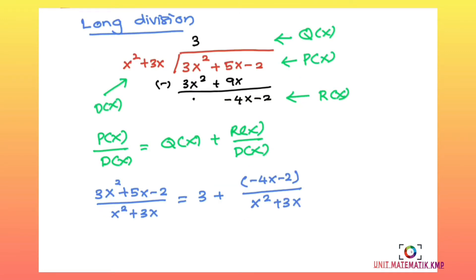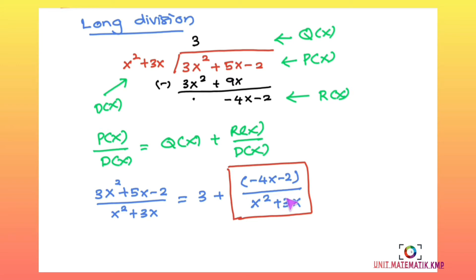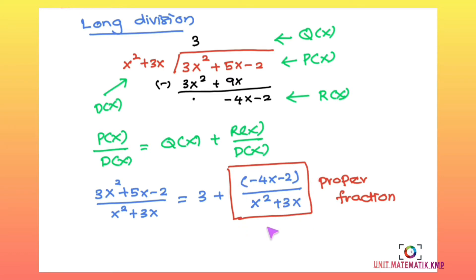We substitute into the general equation. After the long division, the remainder part is a proper fraction — the degree of the numerator is 1 and the degree of the denominator is 2, so the degree of the numerator is less than the degree of the denominator, confirming it is a proper fraction.